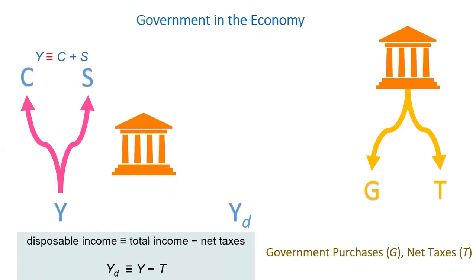So now with the government, we have YD — the disposable income — and with this YD we can either consume it or save it.